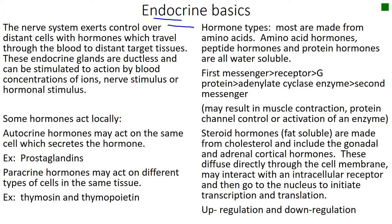The endocrine system exerts control over distant cells with hormones. These travel through the blood to distant target tissues. As a matter of fact, it doesn't always have to be a distant target tissue — some hormones do act locally, and we are going to talk about those in a minute.